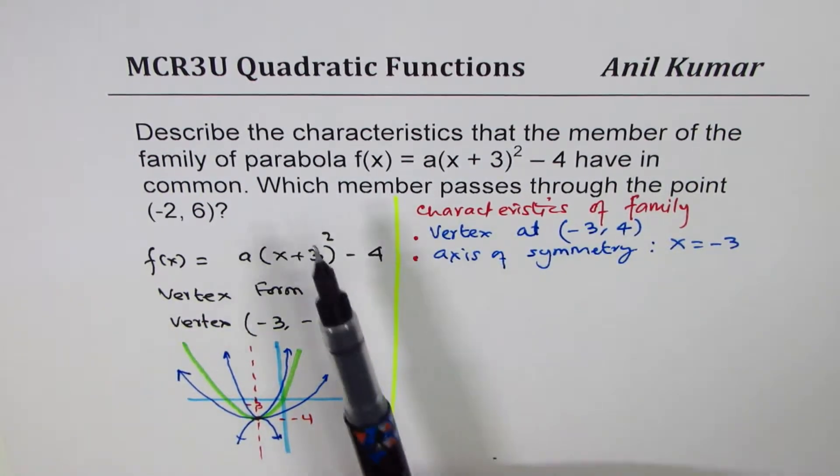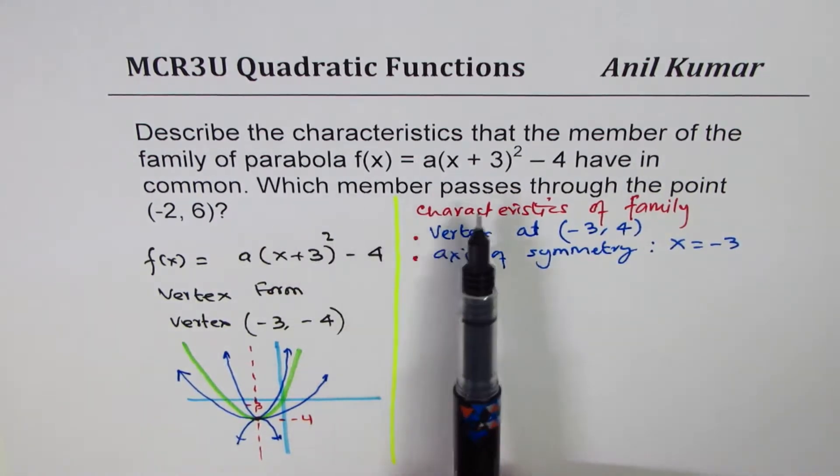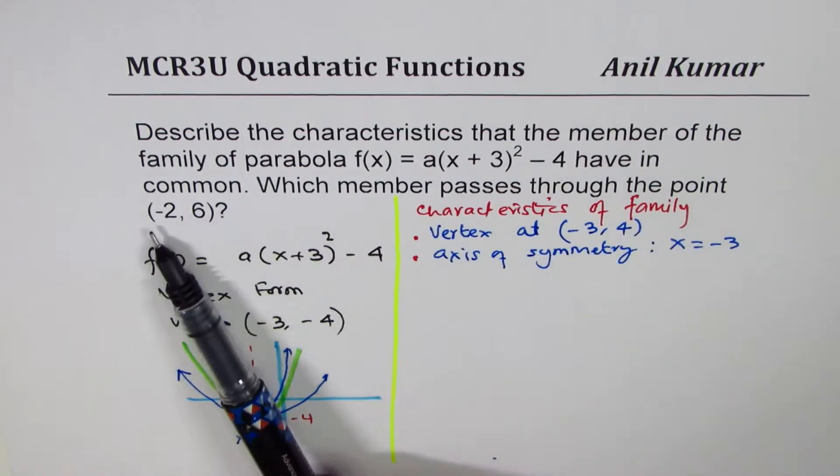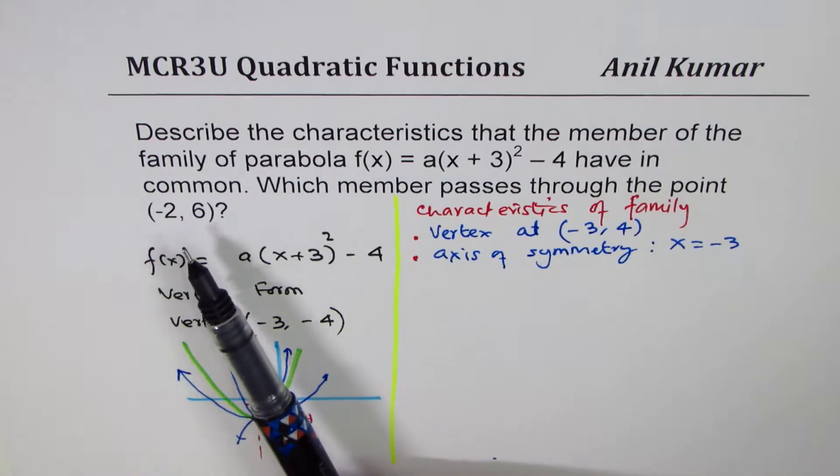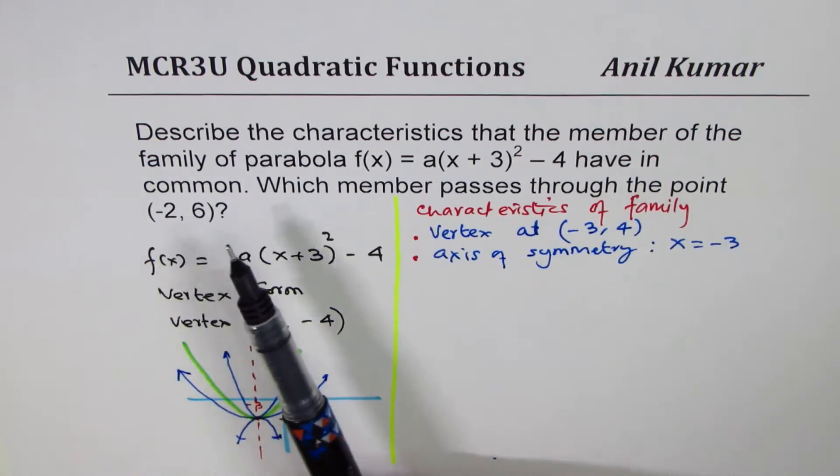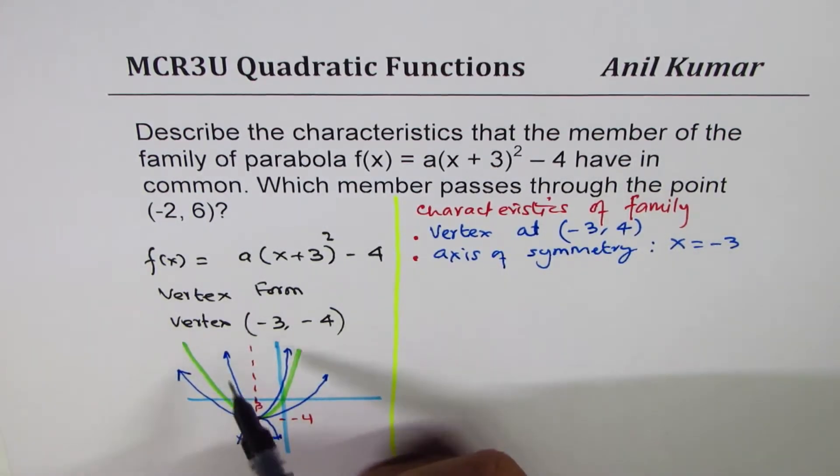And now, let's look into the second half, which is which member passes through the point (-2, 6)? So specifically through (-2, 6). That is the question.